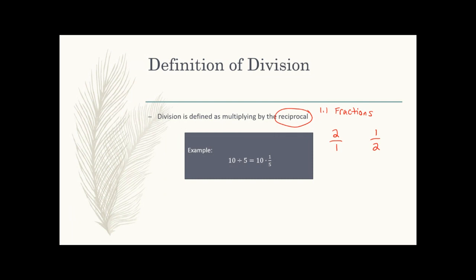To demonstrate: 10 divided by 5 gives you 2. That's the same as doing 10 times one-fifth. Multiplying a whole number times a fraction, you multiply the whole number times the top of the fraction: 10 times 1 is 10 over 5. Divide 5 from both — 10 divided by 5 is 2, and 5 divided by 5 is 1. So you get two over one, which equals two. You get the same answer whether you just do 10 divided by 5 or treat it like a fraction.